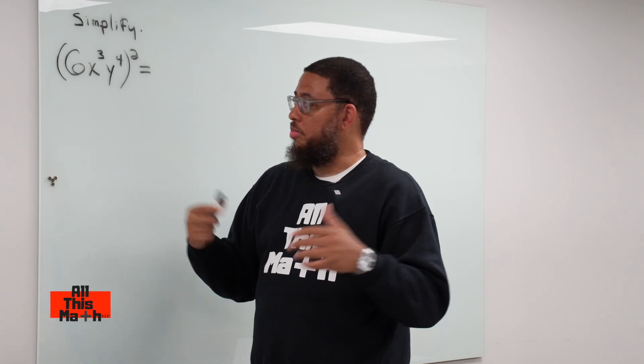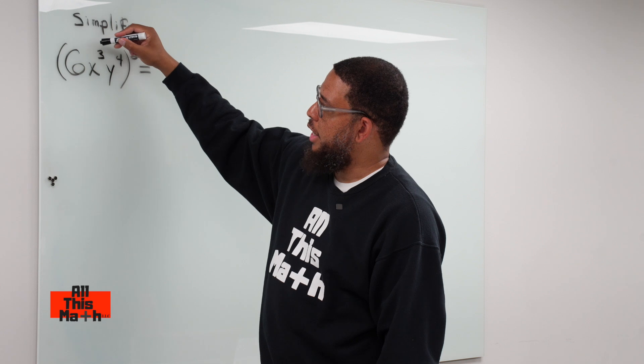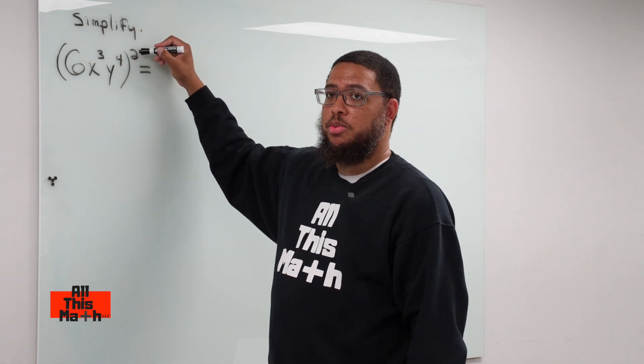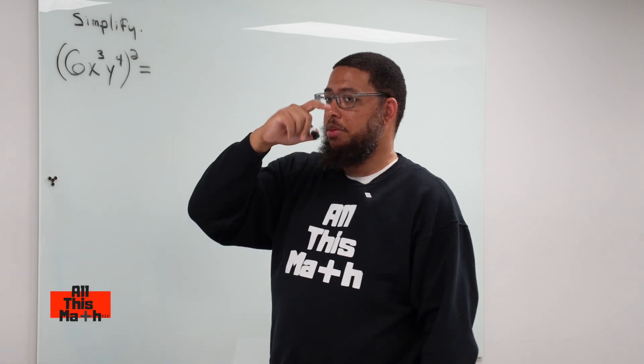That's how I like to think of it. Sometimes I even call it the distributive exponent property, because this exponent 2 is going to get multiplied by every exponent inside the parentheses. So the outside exponent gets multiplied by every exponent inside.